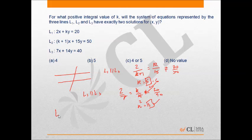Now the last option is L2 parallel L3. In that case k plus 1 upon 7 equals 15 upon 14 not equals 50 by 40. So from that we get k is equal to 13 upon 2.